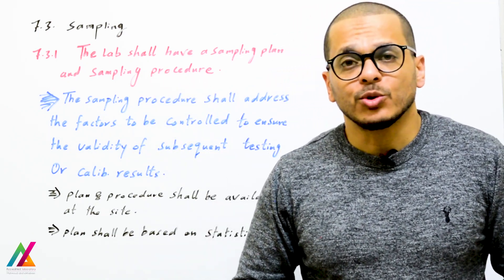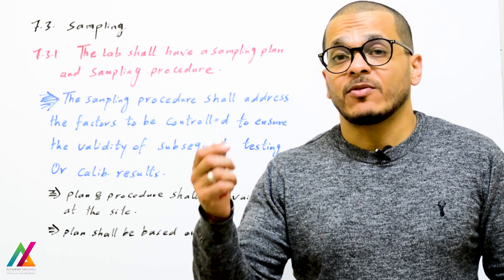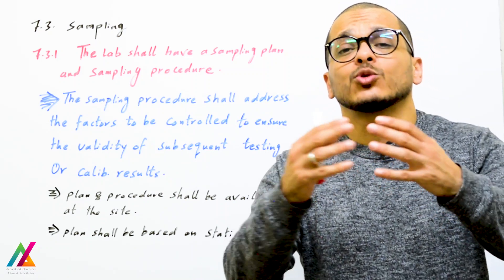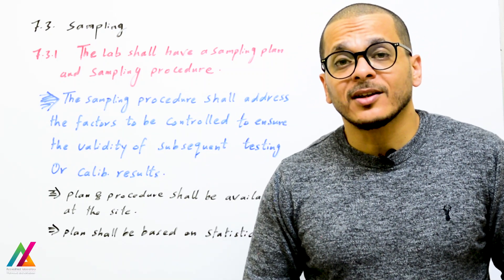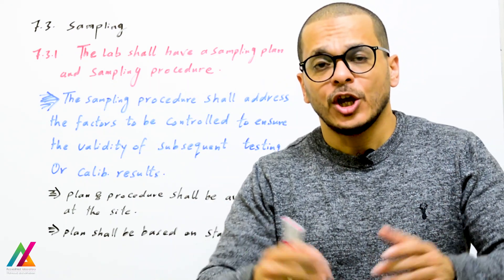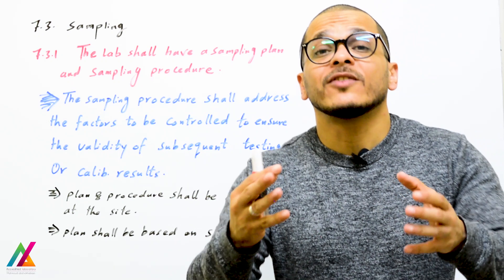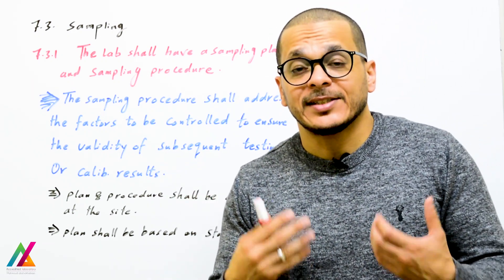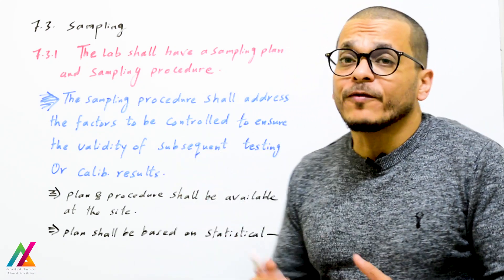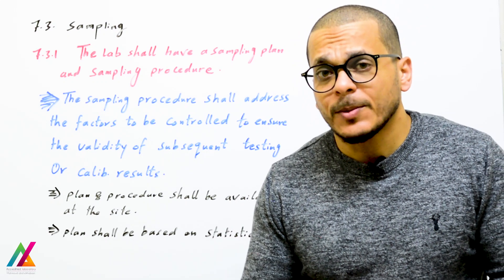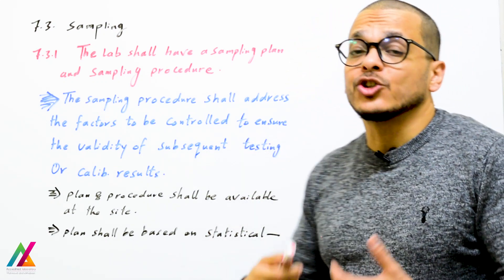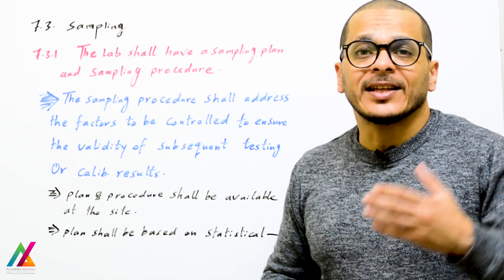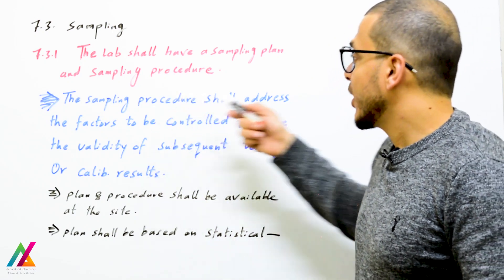It is very important that the lab shall have a sampling plan and sampling procedure — similar to how you need a validation plan, validation report, verification plan, and procedure for extraction of target analytes. All of these are important to get valid results and to ensure the validity of results.